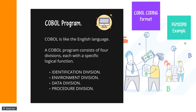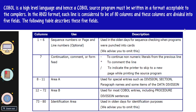Now let's move on to COBOL coding format. COBOL is a high-level programming language and a COBOL source program has to be written in a specific format so that the compiler can process it. Each line is considered to be 80 columns and these columns are divided into five fields. Position 1 to 6 is used for sequence numbers, used during the 1960s, 70s and 80s when punch cards were used. Position 7 is used for continuation and comments.